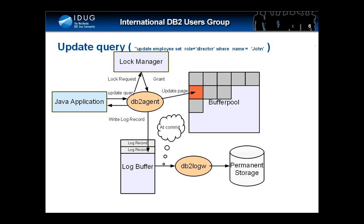But before the data page is modified, a log record that describes the update operation is written to the log buffer. At commit time, a commit log record is also written and flushed to disk. The commit call returns only after ensuring that the log record is in a durable medium. This ensures that even in the event of a power loss — where changes to the database in the buffer pool are lost — the database is able to reconstruct that change from the log records during the crash recovery process.